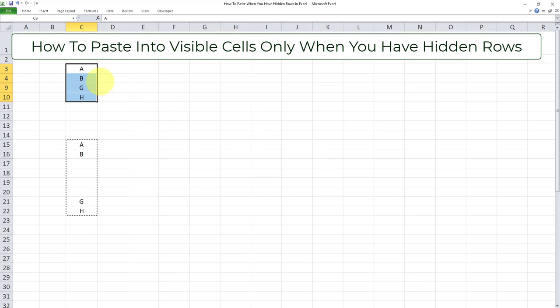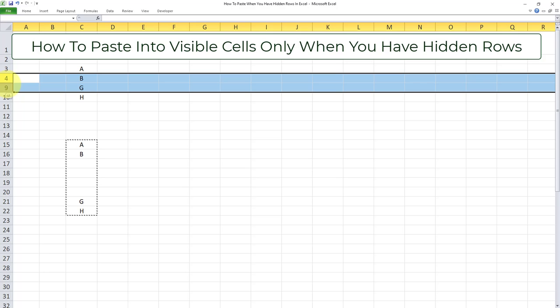And as you can see here, the values A, B, G, and H have been pasted correctly in this range. But let's go ahead and unhide the hidden range to see whether or not those cells have remained intact.